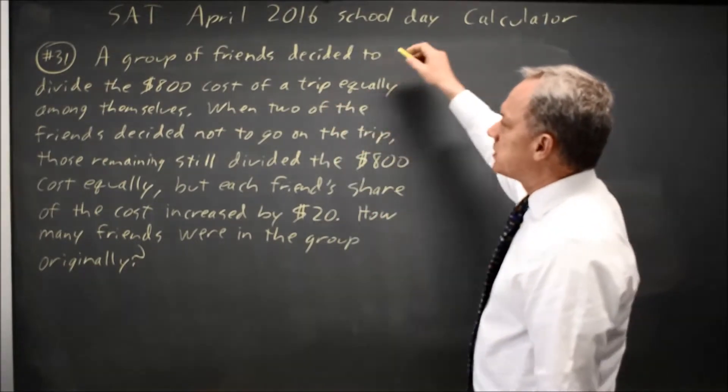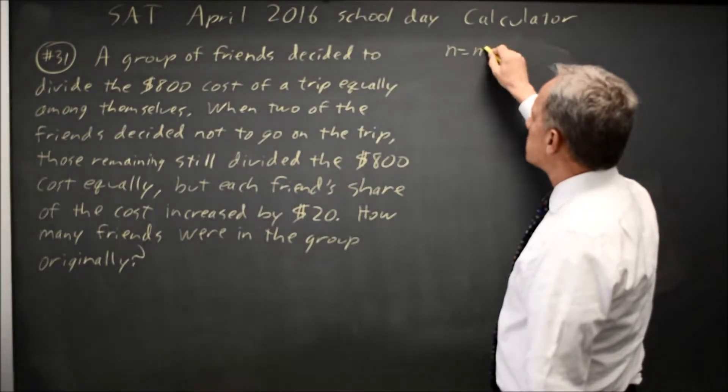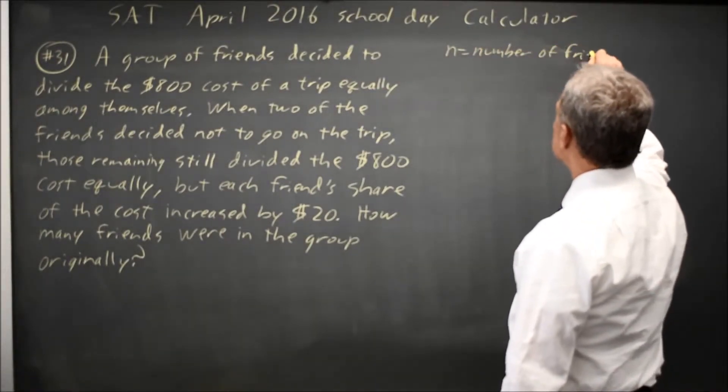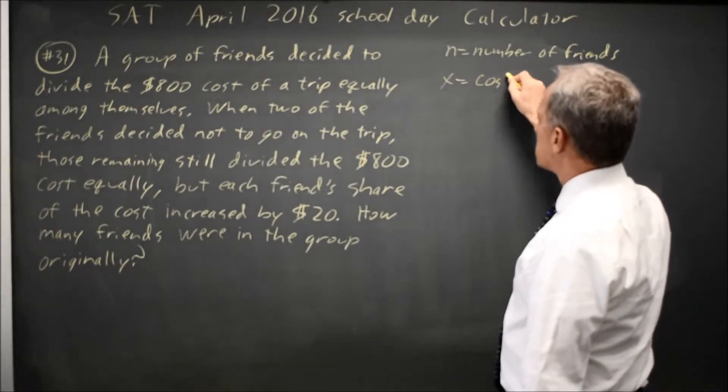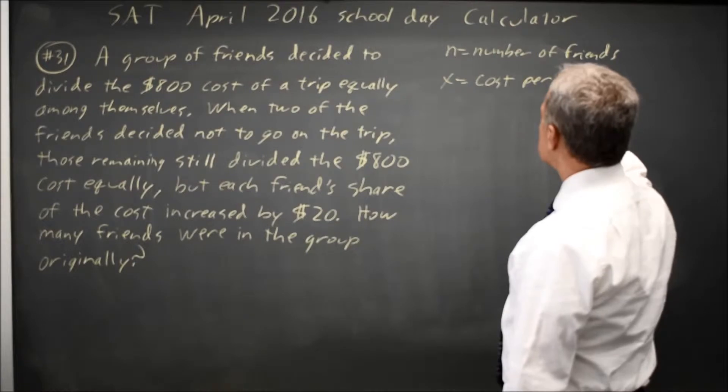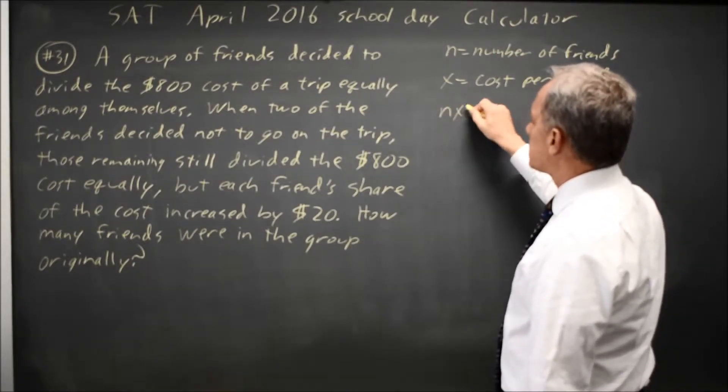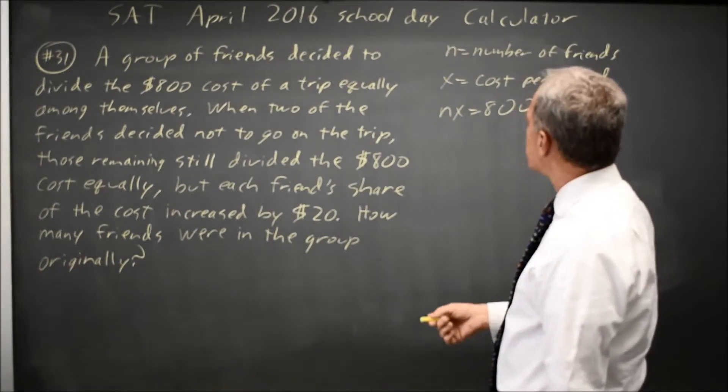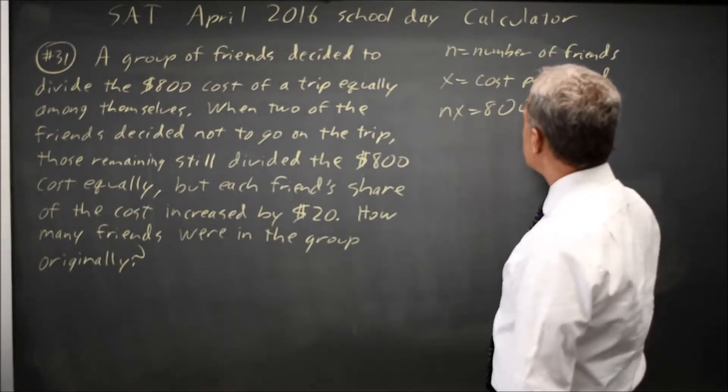They say the total cost of 800 is divided equally. So let's say n equals number of friends in the original group and x equals cost per friend if they all go. So nx equals 800. And we want to solve for the number of friends. We're going to solve for n. So I'm going to solve this equation for x.